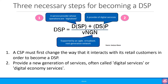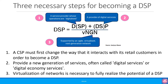The second step is that they provide a new generation of services, often called digital services or digital economy services. The third and final step is that they virtualise their networks, which is necessary to fully realise the potential of a DSP. When we talk about virtualisation, it's virtualisation of Core and RAN both. If you look at our Open RAN video, we explained this in the beginning before going into Open RAN details.